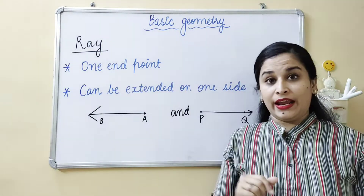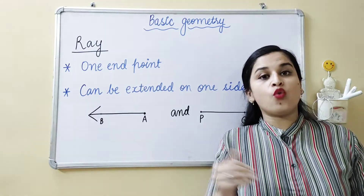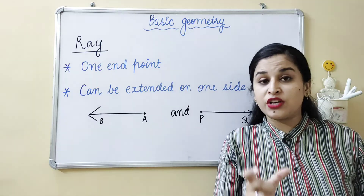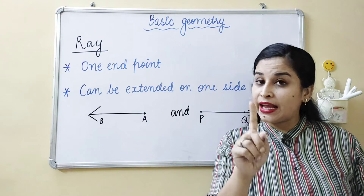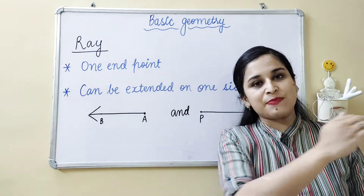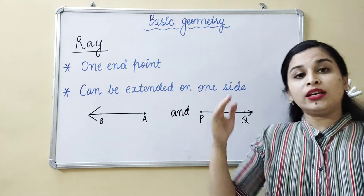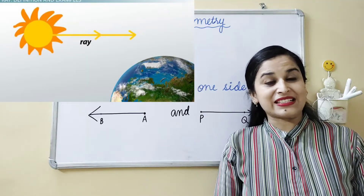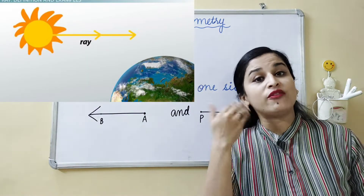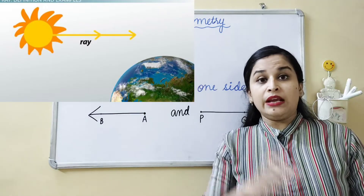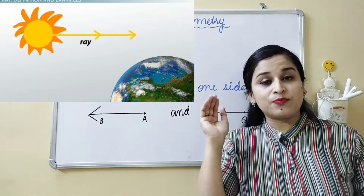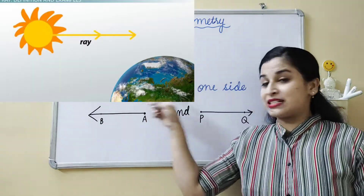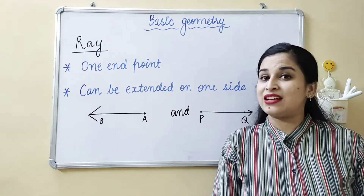Our next term is ray. What is a ray? We have done line and line segment — now we are doing ray. A ray is a geometric shape which has one end point, and from the other side it can be extended. The real life example of a ray is sunlight. When the sun gives light to the earth, it spreads like rays. The end point is the sun itself, and the rays coming down to the earth are extended on that side. So sun rays are the real example of a ray.